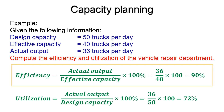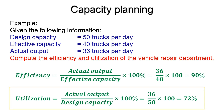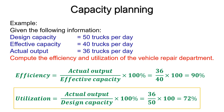Compared to the effective capacity of 40 units per day, 36 units per day looks pretty good. However, compared to the design capacity of 50 units per day, 36 units per day is much less impressive, although probably more meaningful. Because effective capacity acts as a lid on actual output, the real key to improving capacity utilization is to increase effective capacity by correcting quality problems, maintaining equipment in good operating condition, fully training employees, and improving bottleneck operations that constrain output.